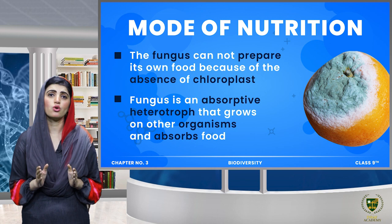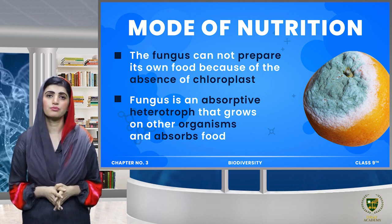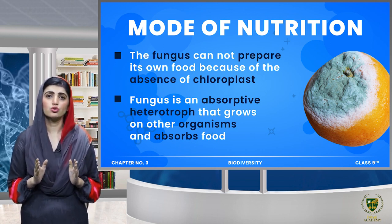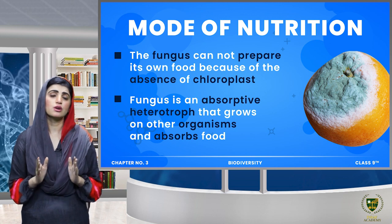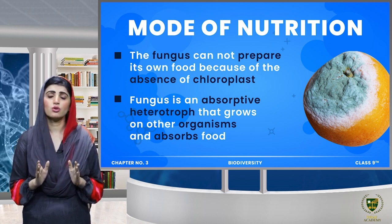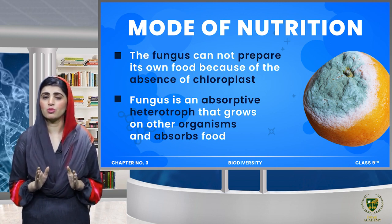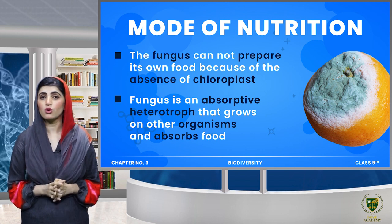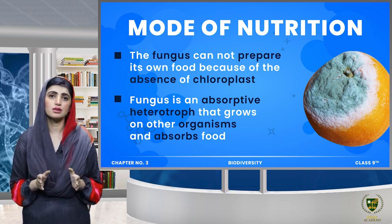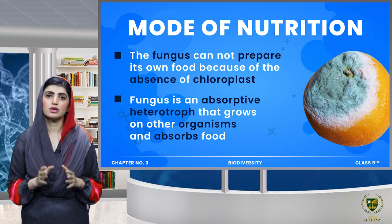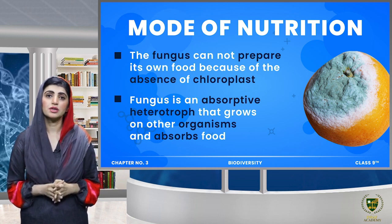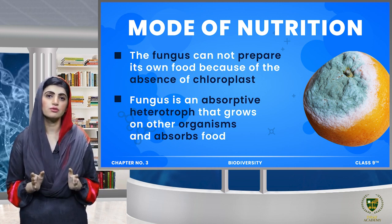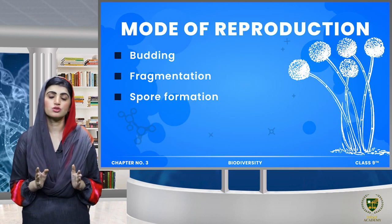Absorptive heterotroph means that fungus will grow on other organisms and absorb nutrients from the surface of other organisms' bodies. It absorbs nutrients from the surface of other organisms' bodies, which is why we call it an absorptive heterotroph.